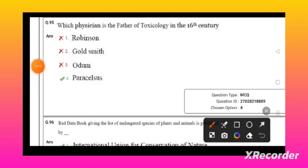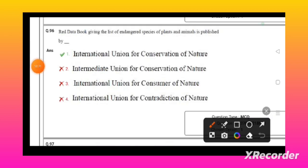Red Data Book giving the list of endangered species, plants, and animals is published by the International Union for Conservation of Nature. The surface which has the maximum albedo - among all these, dry sand will have the maximum albedo.